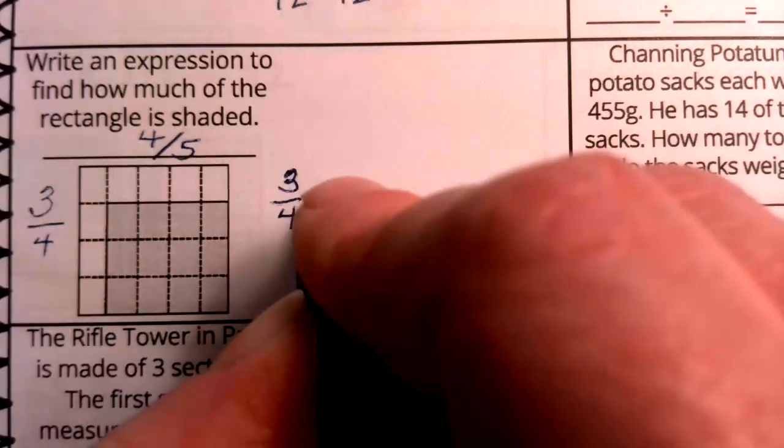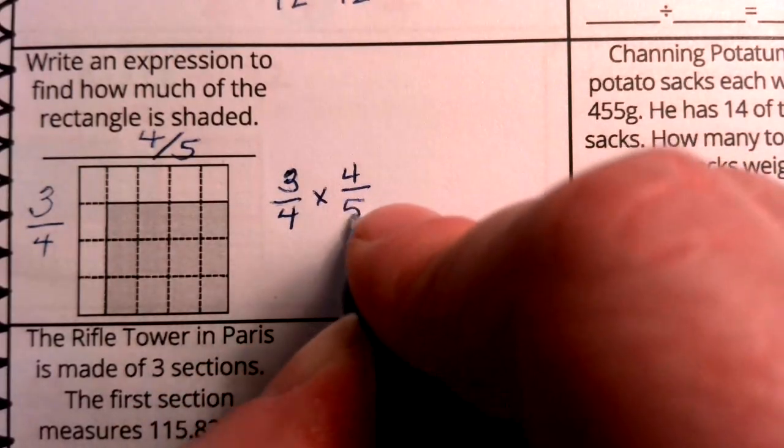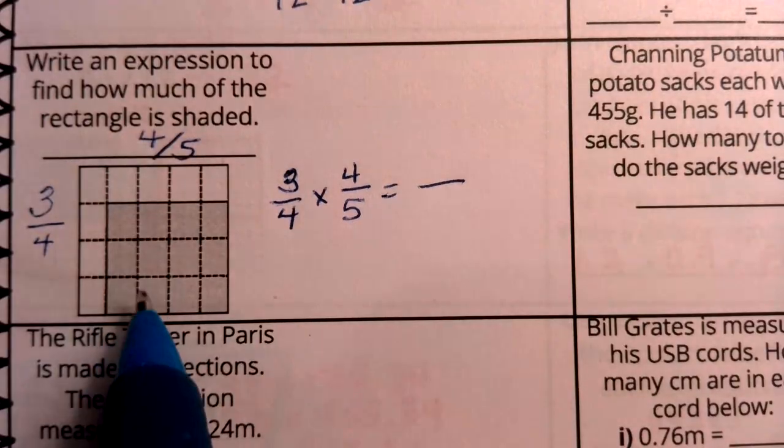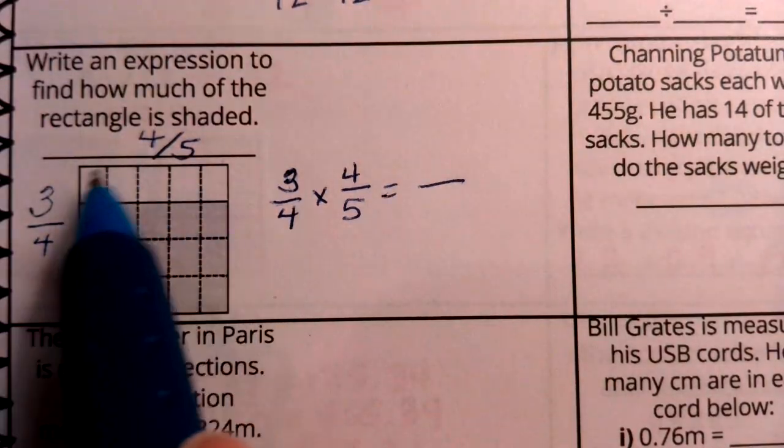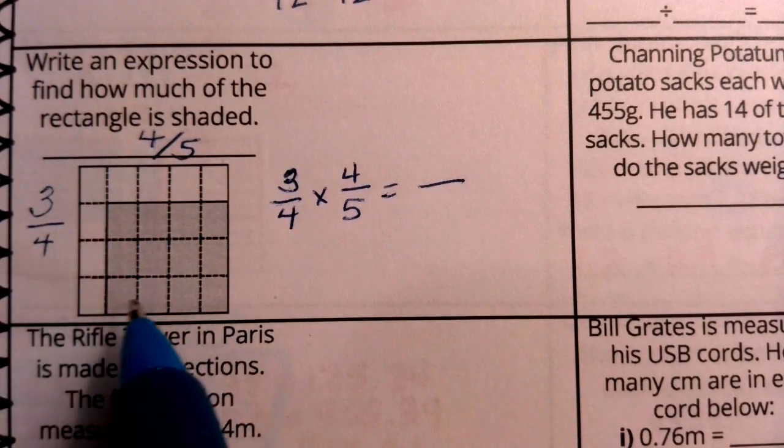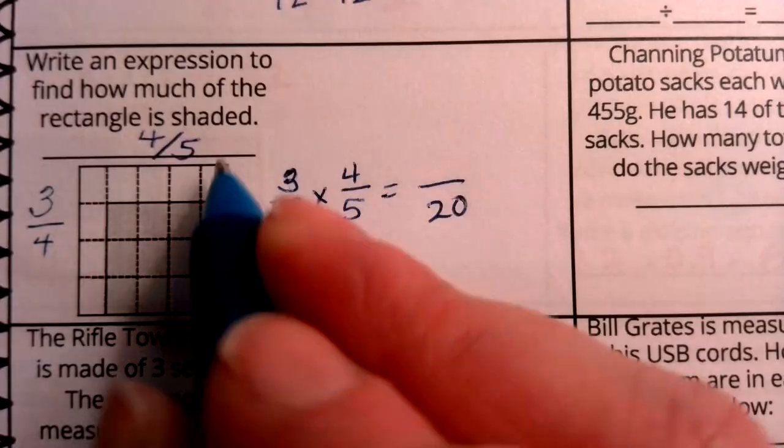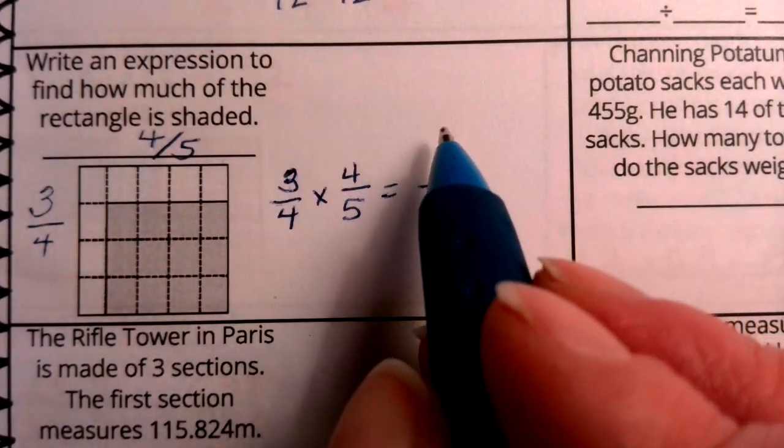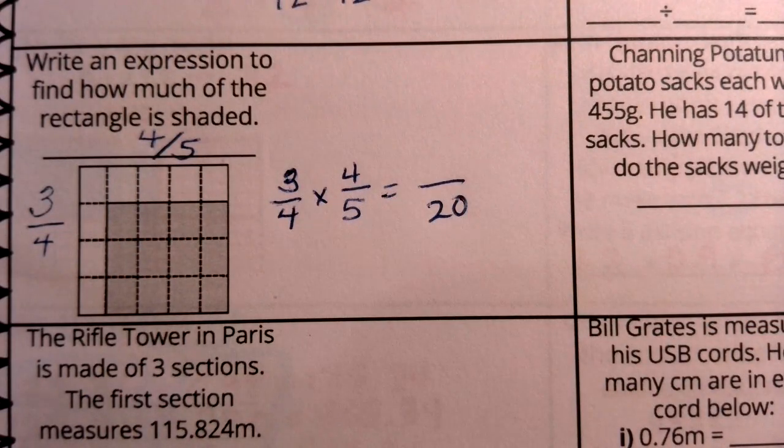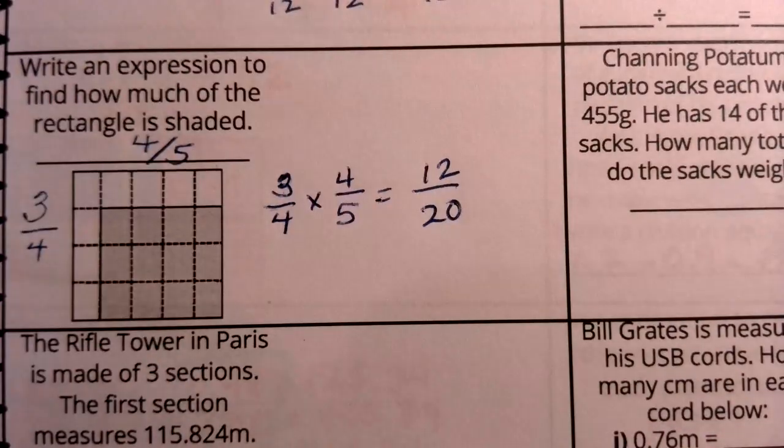3 fourths times 4 fifths is what I have shown in my problem. Now remember, the denominator is how many parts my whole is broken into. If I count all the parts, there are 20, between both the gray and the white. Now my numerator is how many of those parts are gray. And that is exactly 12.